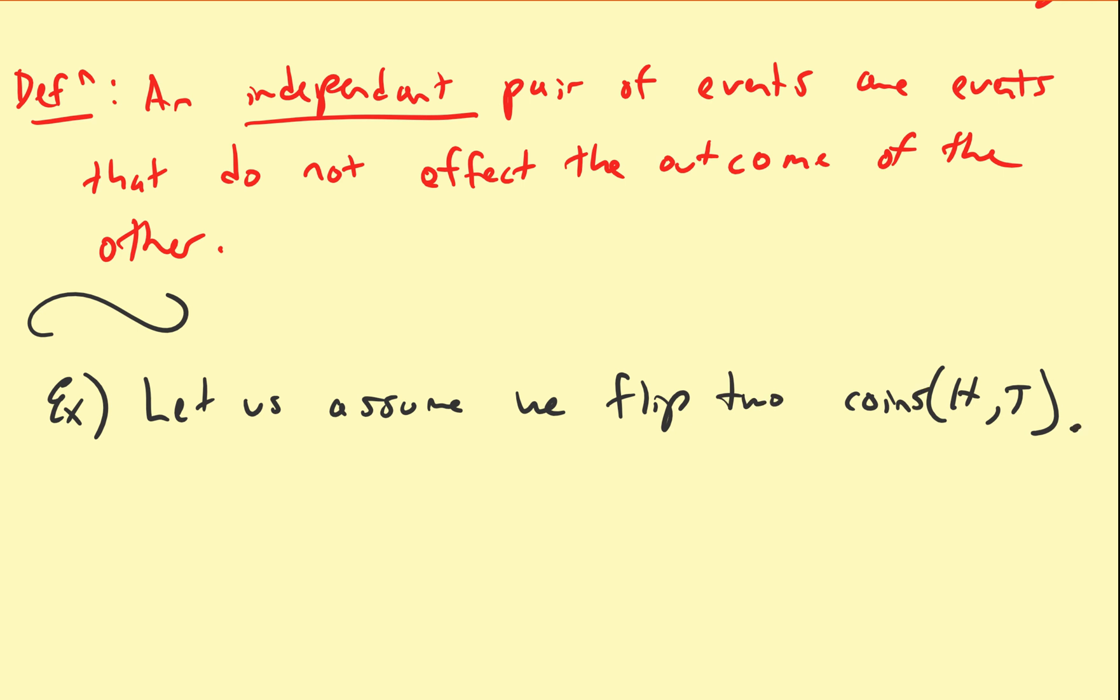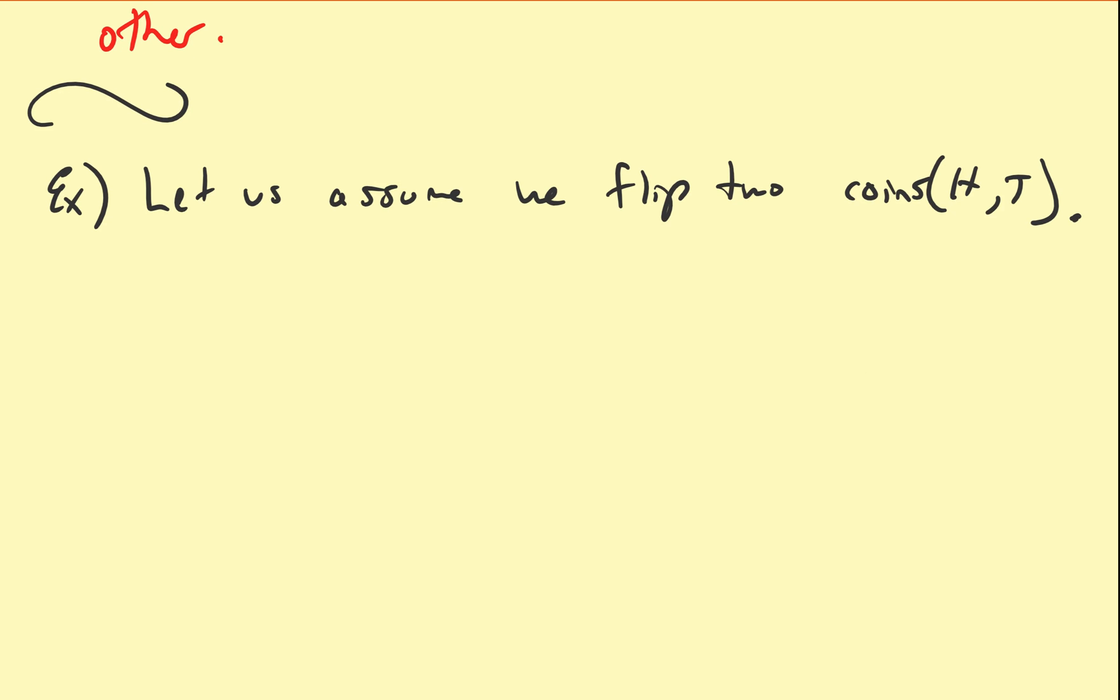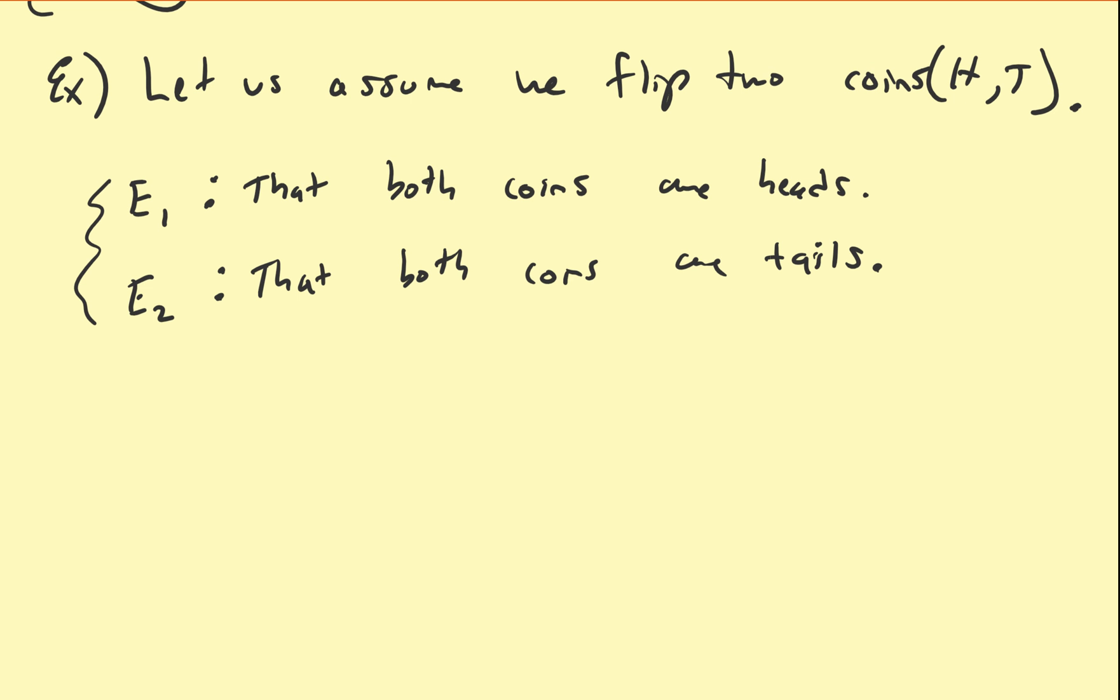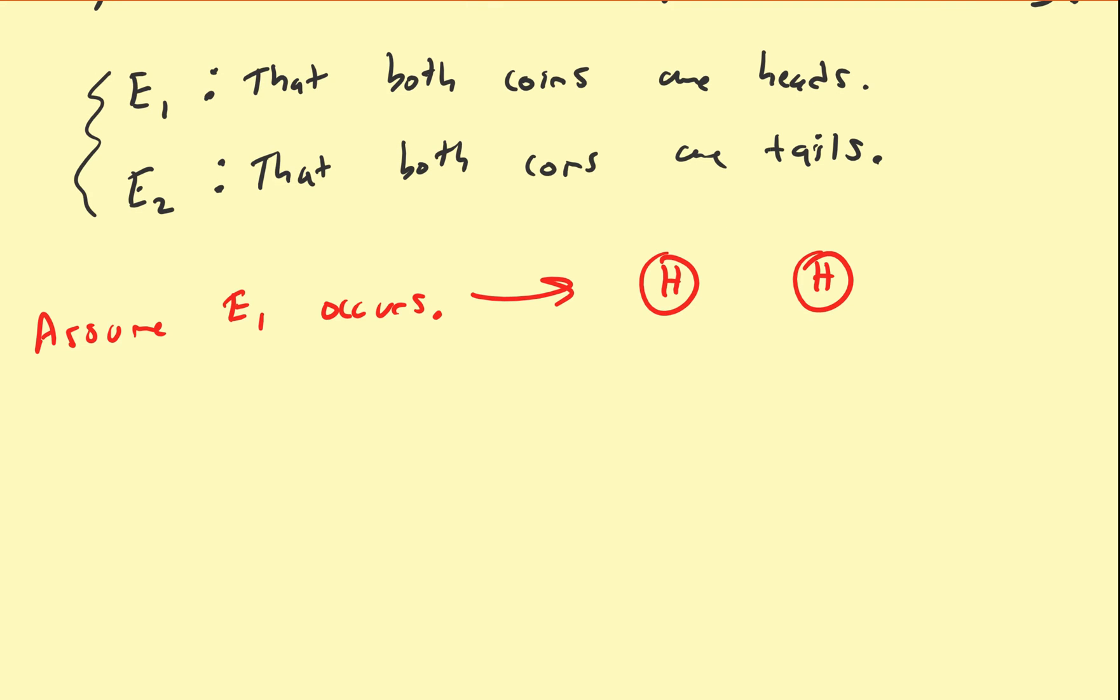And let E1 represent the event that both coins are heads. So assume E1 occurs. So that means if E1 has already occurred, then that means we have heads on the first coin and heads on the second. So is it possible that E2 can also occur simultaneously with it? Well, if both are already heads, unless we flip them upside down, it's impossible for it to be both heads and tails. So if this is true, then that means both cannot be tails.